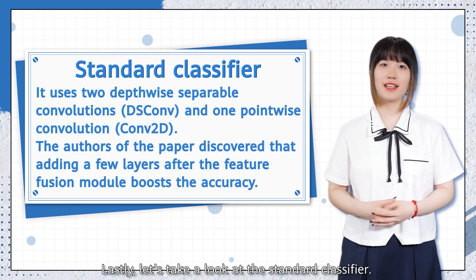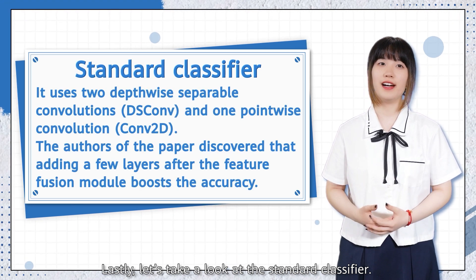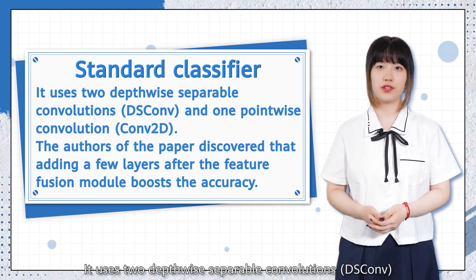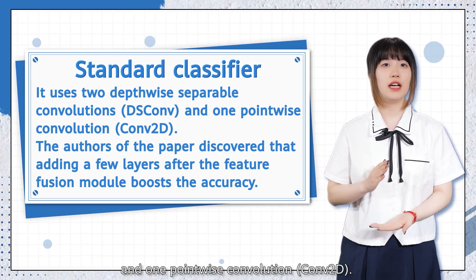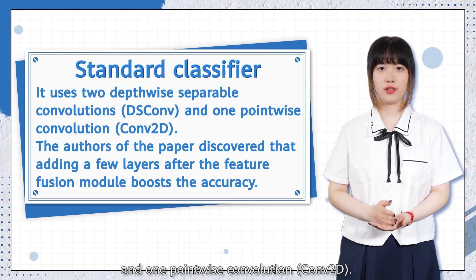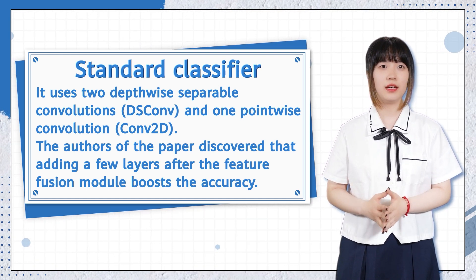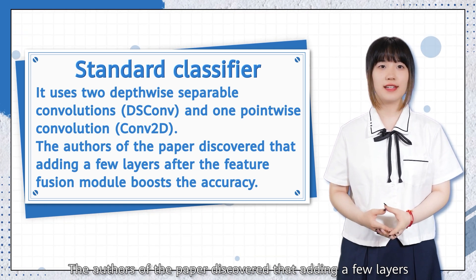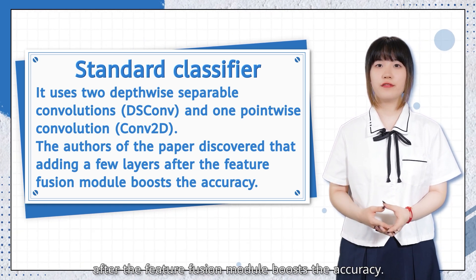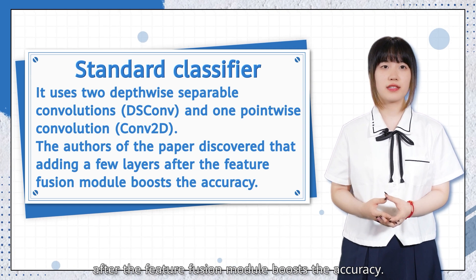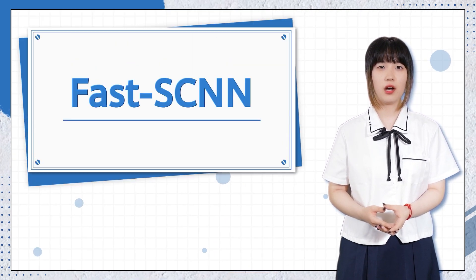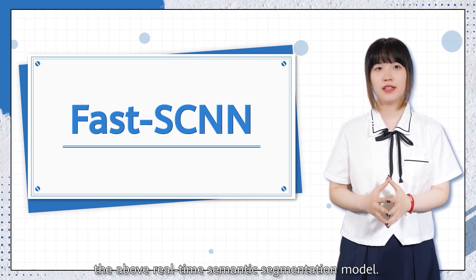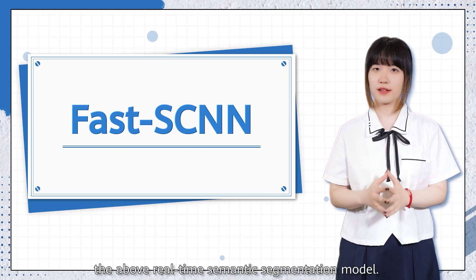Lastly, let's take a look at the standard classifier. It uses two depth-wise separable convolutions and one point-wise convolution. The authors discovered that adding a few layers after the Feature Fusion module boosts the accuracy. All four modules constitute FastSCNN, the above-real-time semantic segmentation model.